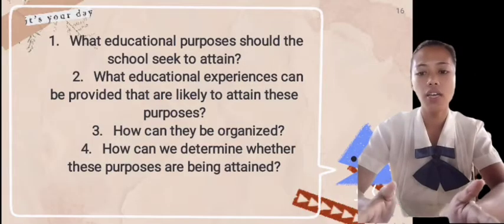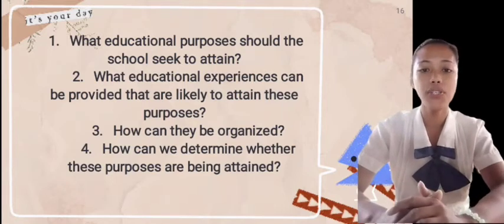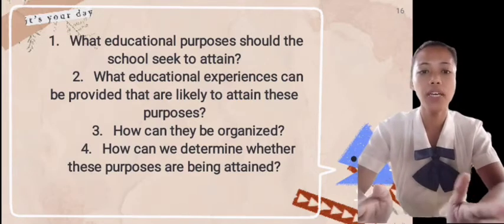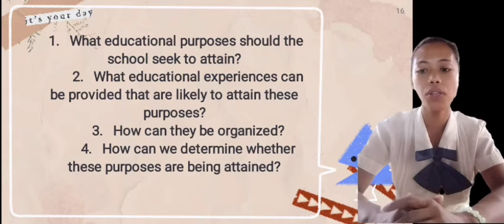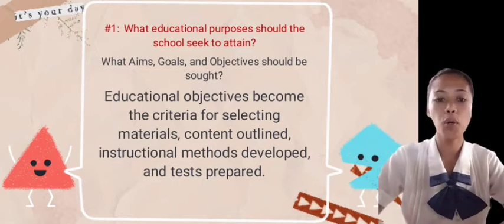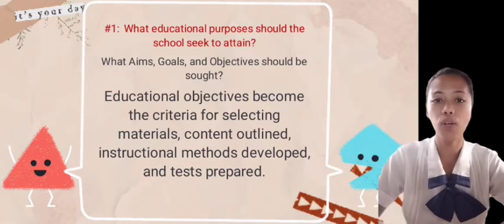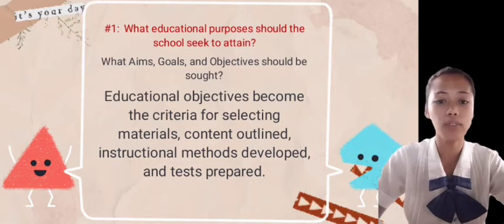The first question: What educational purposes should schools seek to attain? Second: What educational experiences can be provided that are likely to attain these purposes? Third: How can these educational experiences be effectively organized? And the last: How can we determine whether these purposes are being attained or not? For number one — what educational purposes should the school seek to attain, meaning what aims, goals, and objectives should be sought — educational objectives become the criteria for selecting materials, content outlines, instructional methods developed, and tests prepared.